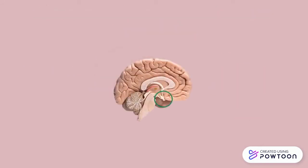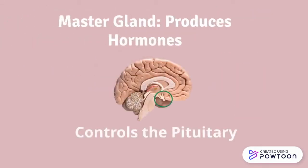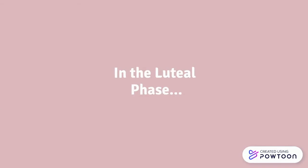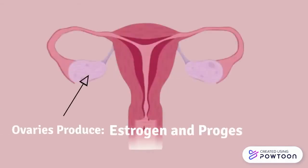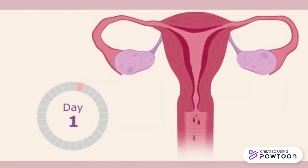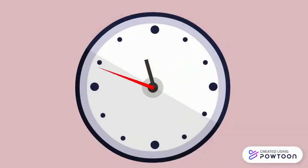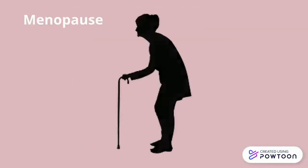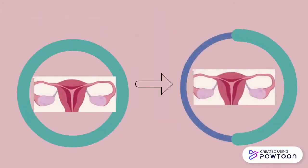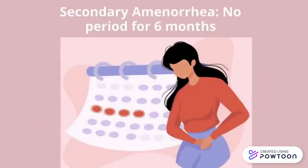The hypothalamus controls the pituitary gland, which is the master gland responsible for producing hormones that signal the ovaries to ovulate during the follicular phase. In the luteal phase, the ovaries produce the hormones estrogen and progesterone, which signal the uterus to respond by preparing the endometrium lining, which is shed in the menstrual phase. This cycle occurs like clockwork, circulating again and again until menopause is reached. However, certain lifestyle factors and choices can disturb this cycle early and cause secondary amenorrhea, in which there is the absence of menstruation for more than six months.